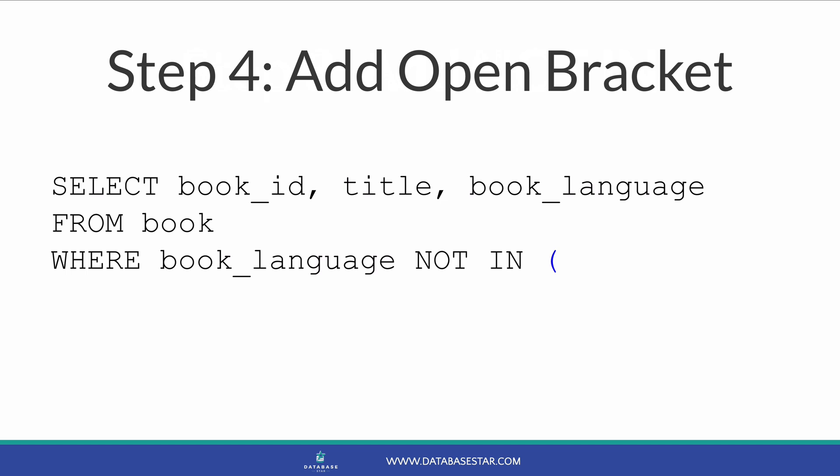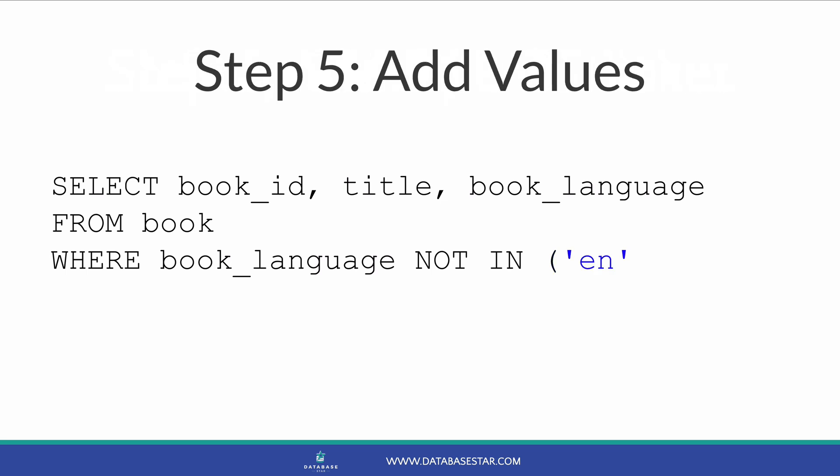Sometimes your IDE will automatically add a closing bracket as well — if so, that's great, because we will need that. If not, you can add it now or later. Step 5 is to add your values. We add in the values here that we want to be excluded from the query. In this example, we know that the book language code for English is EN, so we can add that to our query.